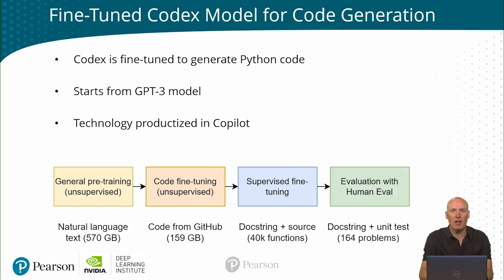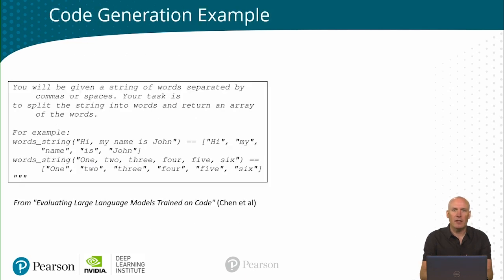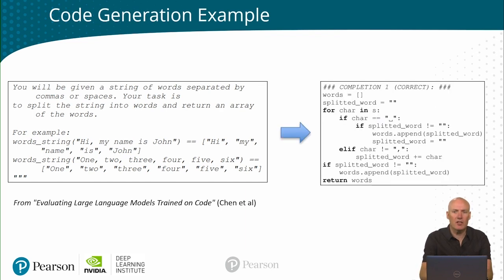Finally, they evaluated the model using unit tests that were checking the functionality of the generated code. Here is an example of what the resulting model can produce. We start with a prompt to the model, which is the doc string describing the desired functionality of a function as well as some examples. The model then produced a completion, which is basically the code implementing this functionality. And this code is actually correct.